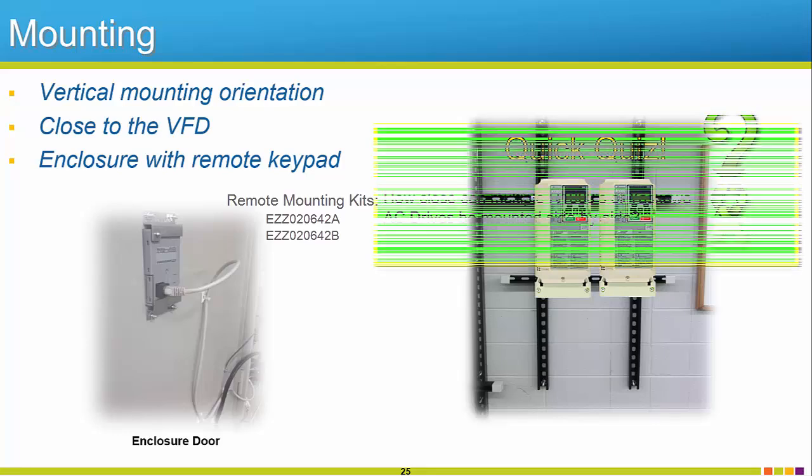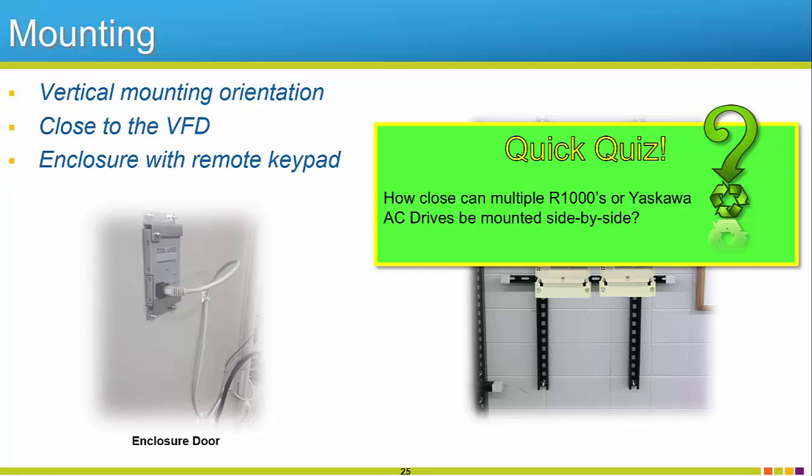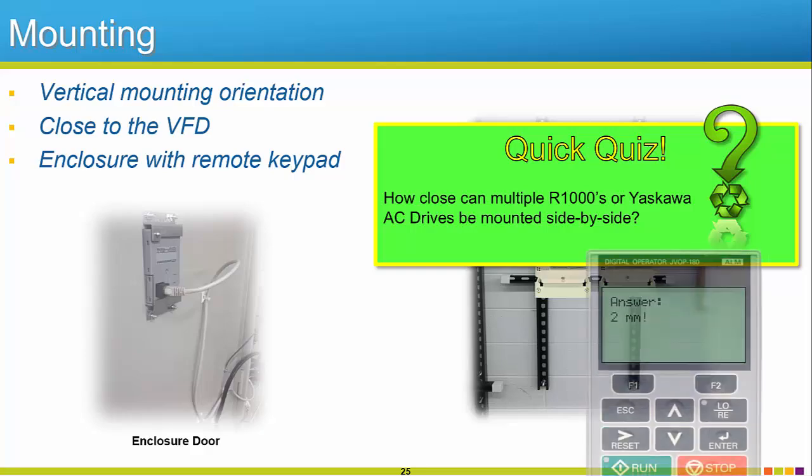Alright, time for a quick quiz. How close can multiple R1000s or Yaskawa AC drives be mounted in a side-by-side arrangement? The answer is 2 millimeters.